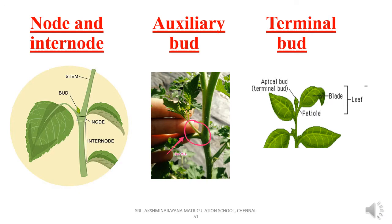In this slide we are going to learn about nodes and internodes, axillary buds, and apical or terminal buds. First, let us see what are nodes and internodes. Nodes are the part of the stem where a leaf arises — that is, where the stem and leaf connect.